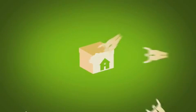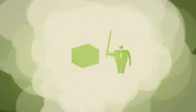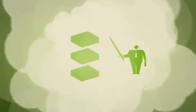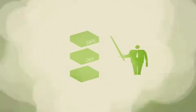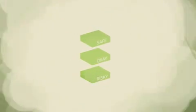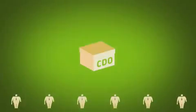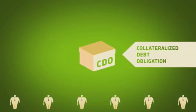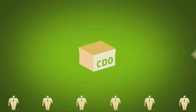Then he sticks his banker wizards on it to work their financial magic, which is basically cutting it into three slices. Safe, okay, and risky. They pack the slices back up in the box and call it a collateralized debt obligation, or CDO.